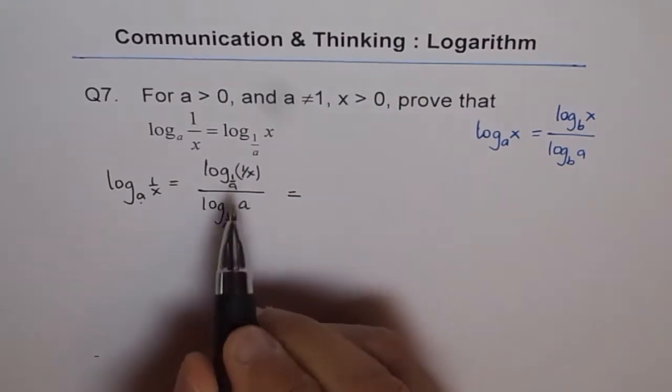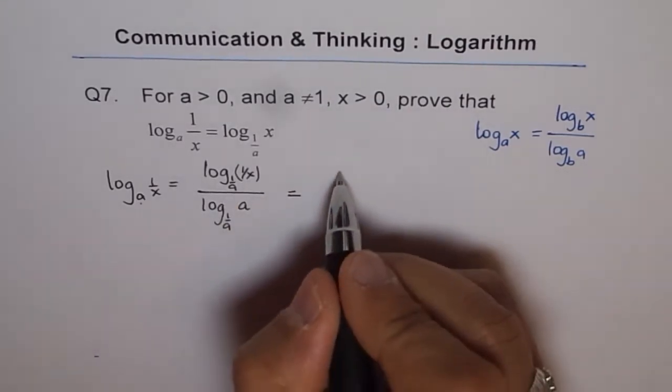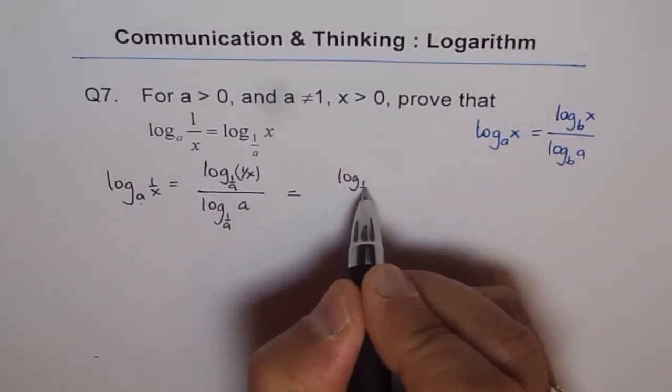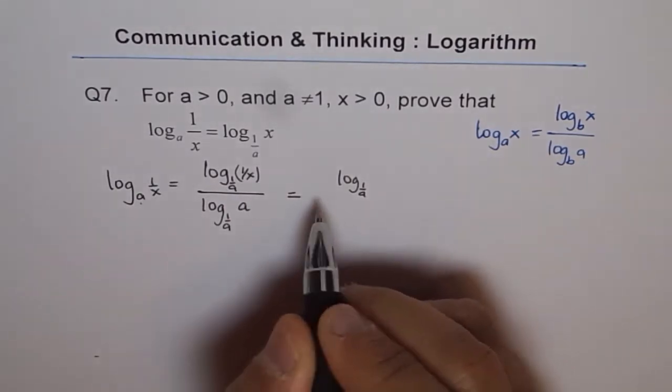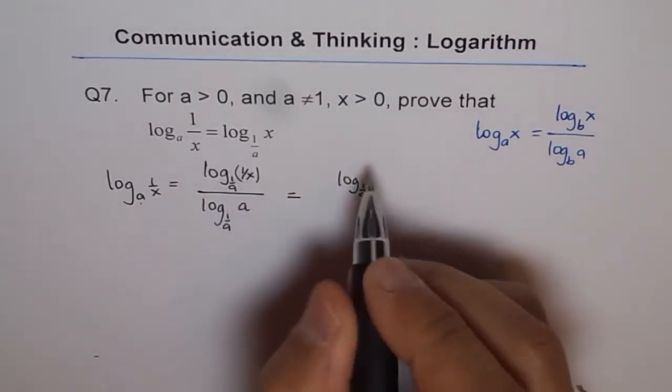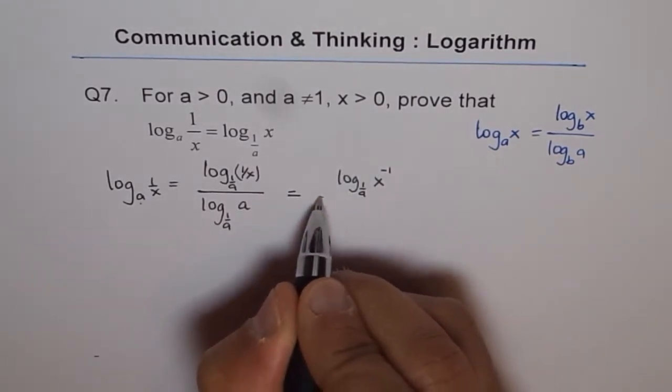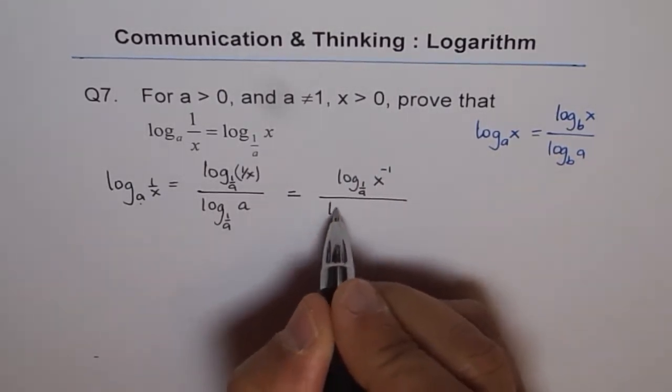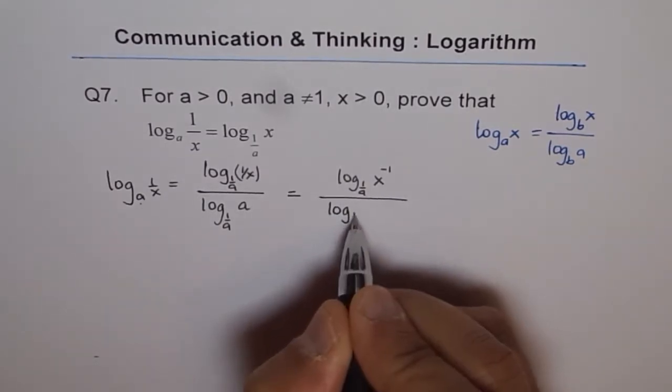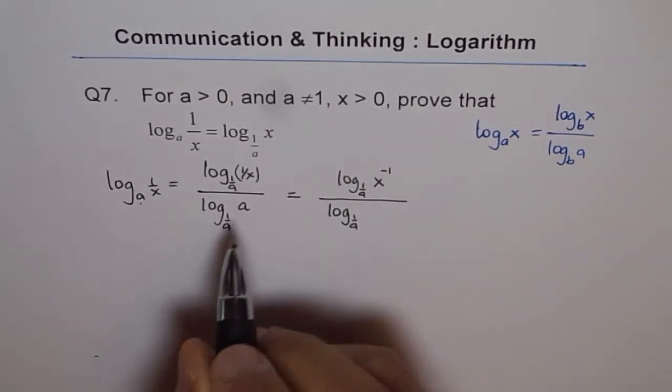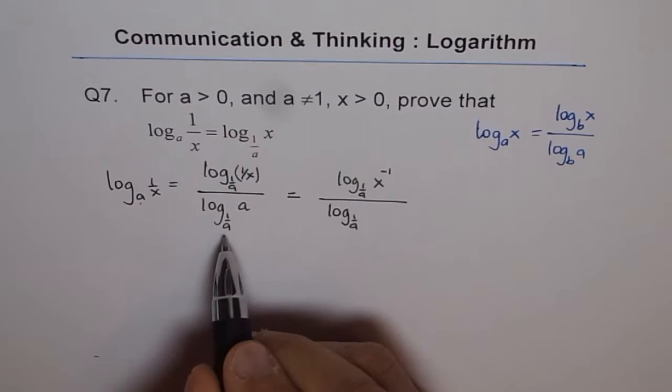From here we can write this as log to the base 1 over a. We want x, so 1 over x is x to the power of minus 1. And here in the denominator we can write log to the base 1 over a. We should write a as 1 over a to the power of minus 1.